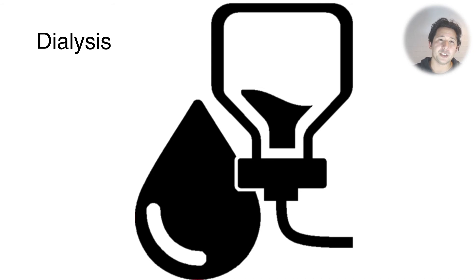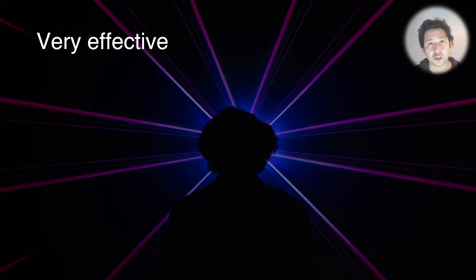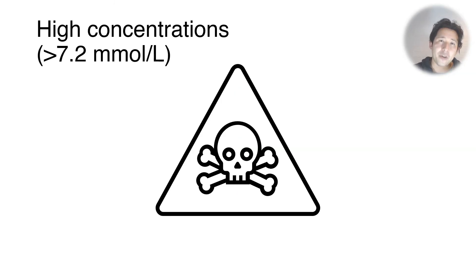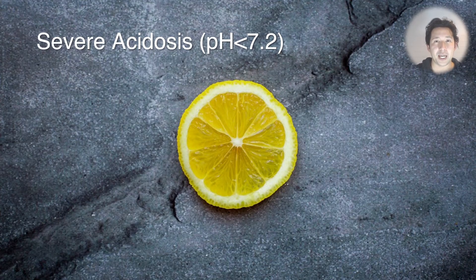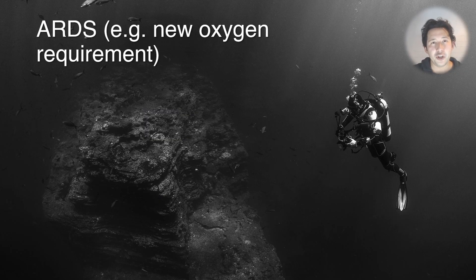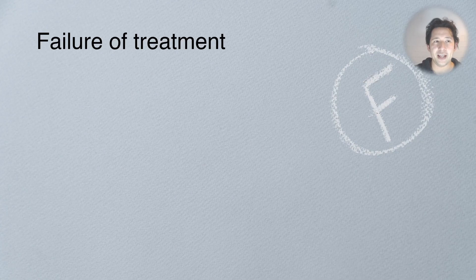Dialysis is extremely effective in removing aspirin from the body. The indications are: very high concentrations of salicylate greater than 7.2 millimoles per liter; a severe metabolic acidosis of pH 7.2 or less; any altered consciousness, which is suggestive of severe overdose; any new oxygen requirement, which signals ARDS; renal failure; and failure of other standard supportive treatments including urinary alkalization.